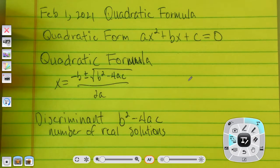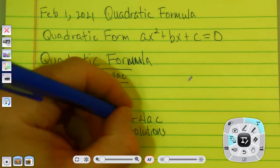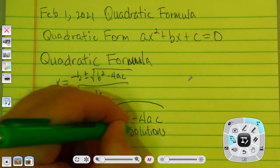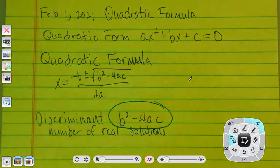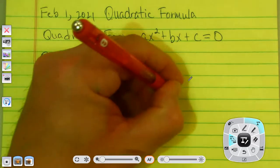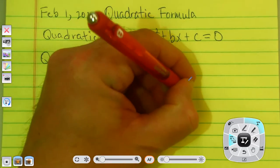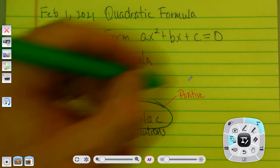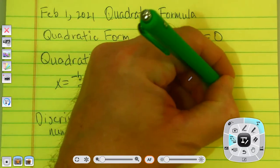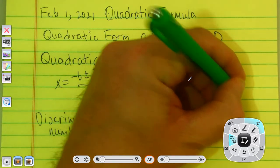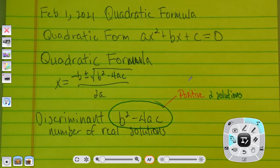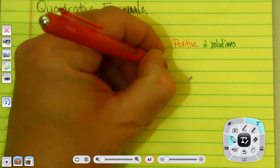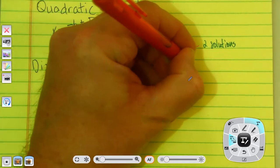It actually tells us the number of real solutions. Here's how it tells us that. If the discriminant is positive, there are two solutions.